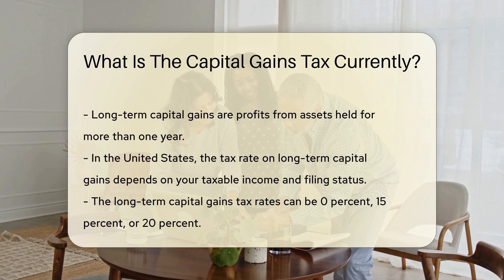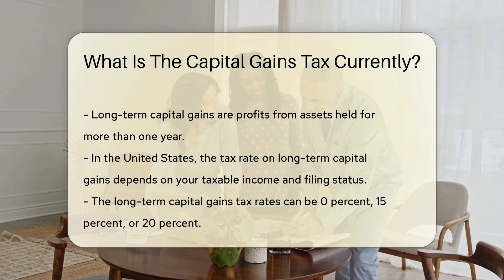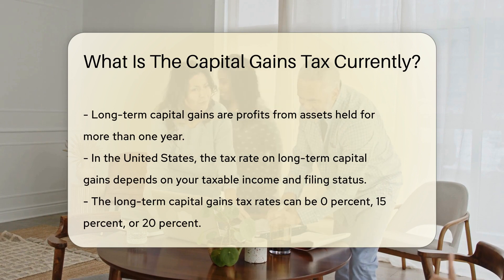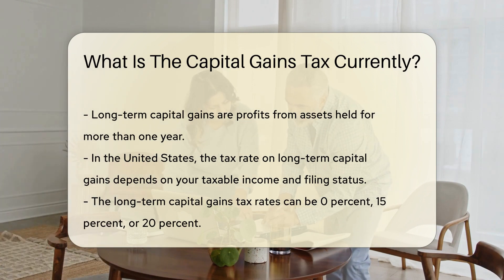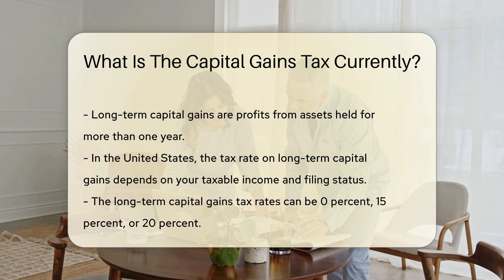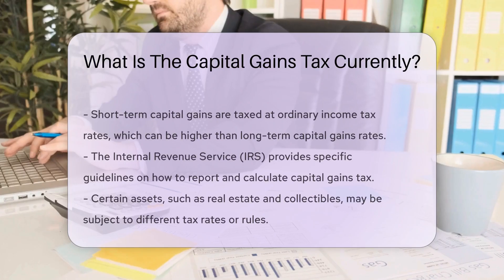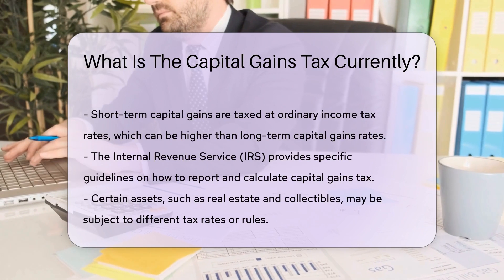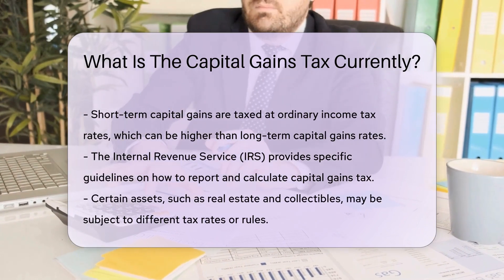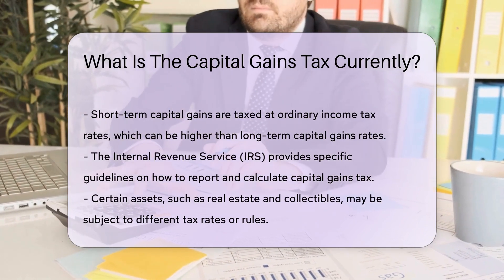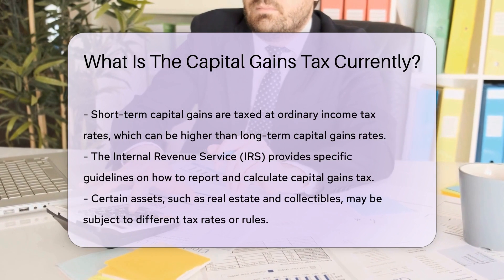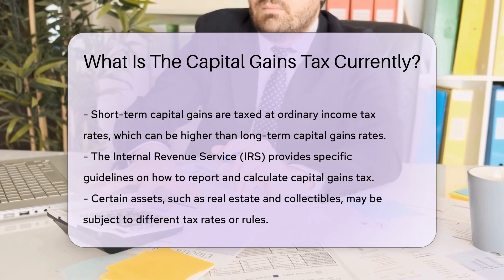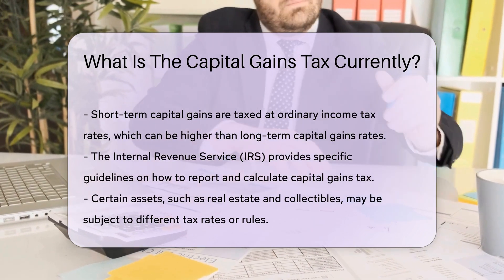In the United States, the tax rate on long-term capital gains depends on your taxable income and filing status. The rates can be 0%, 15%, or 20%. Short-term capital gains are taxed at ordinary income tax rates, which can be higher than long-term capital gains rates. The Internal Revenue Service (IRS) provides specific guidelines on how to report and calculate capital gains tax.